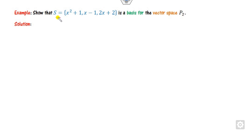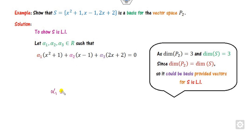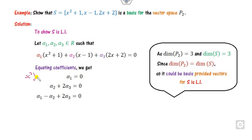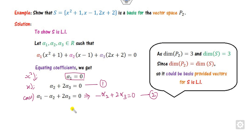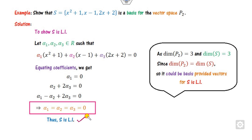Here, the dimension of S is 3, and the dimension of the polynomial space is also 3 — they are the same. So we simply check whether S is LI. We equate coefficients of x², x, and the constant term. We get alpha 1 = 0. Substituting, minus alpha 2 plus 2·alpha 3 = 0. Adding equations 1 and 2, alpha 3 = 0, then alpha 2 = 0. So alpha 1 = 0, alpha 2 = 0, alpha 3 = 0 — it is LI, and therefore a basis.